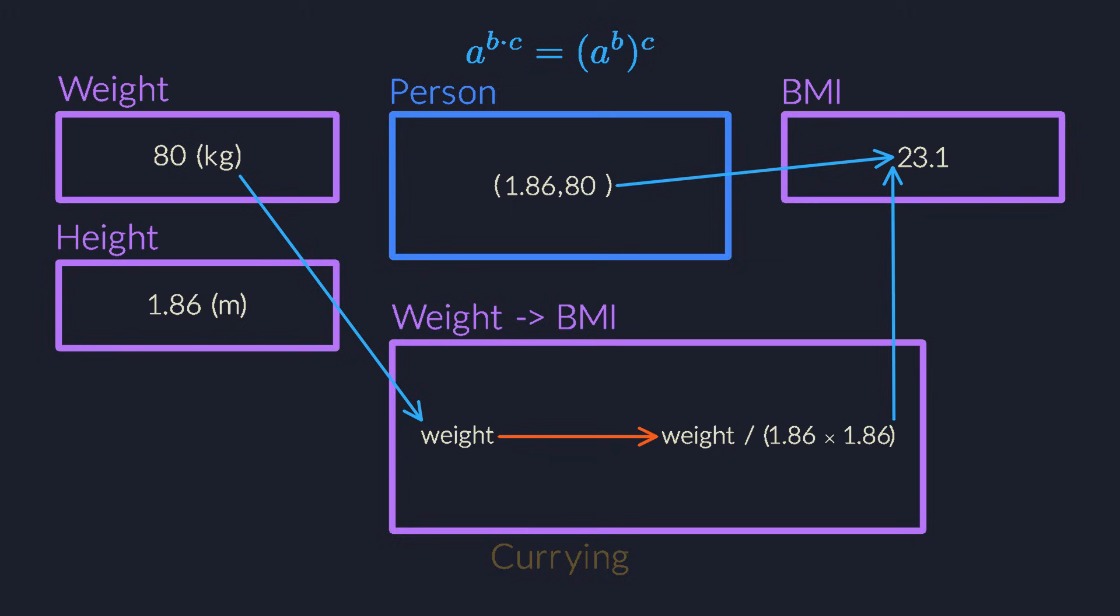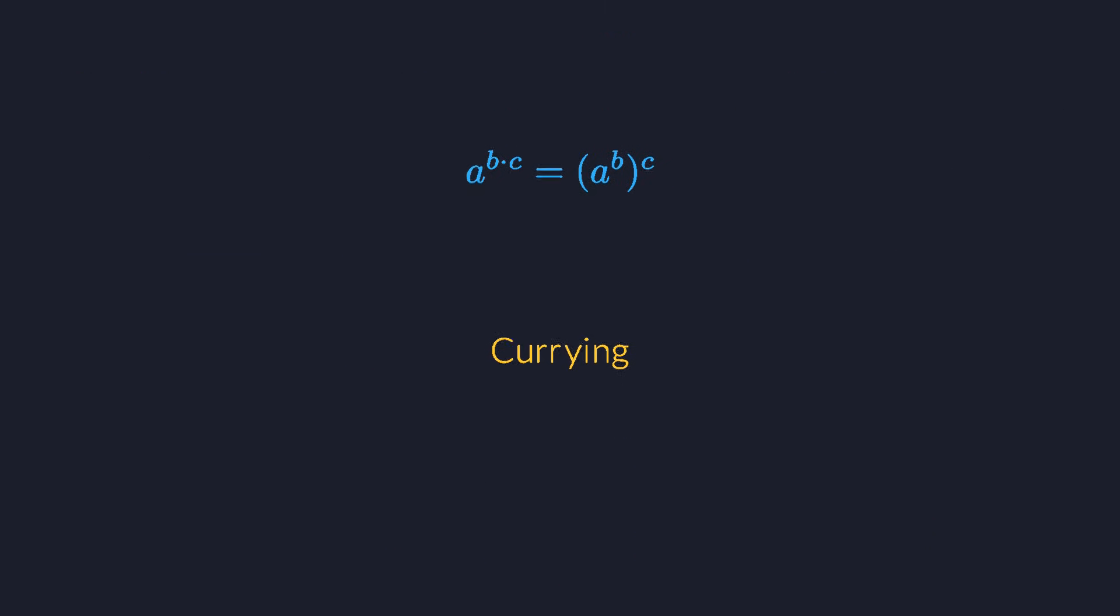This technique is called currying. It's a well-known idea in computer science, but it also plays a role in other domains of mathematics. For example, we will run into it again when we talk about tensors, because a tensor is a function that takes multiple inputs. So, in a future series about tensor algebra, we will see how we can make a tensor take its inputs one at a time. And we will discover that this has important consequences for matrices.